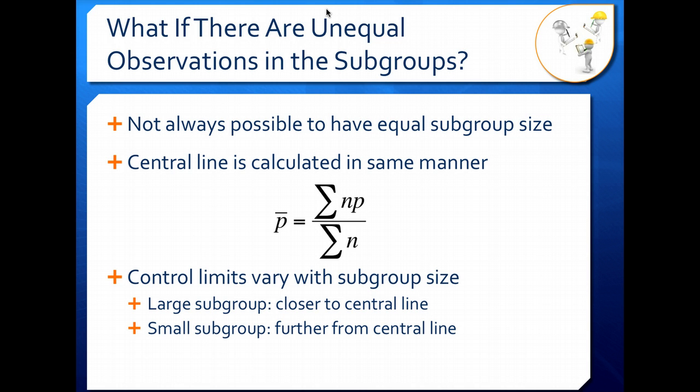When you're looking at a p-chart, your central line is calculated in the exact same way as if your subgroups are equal. So that formula doesn't change.